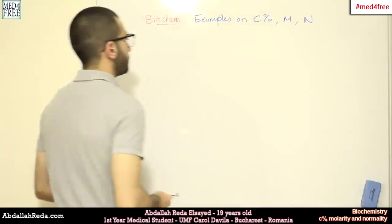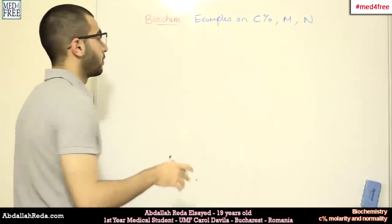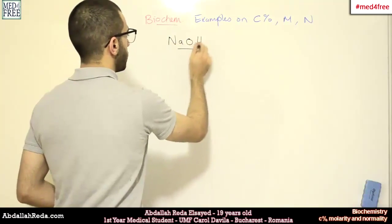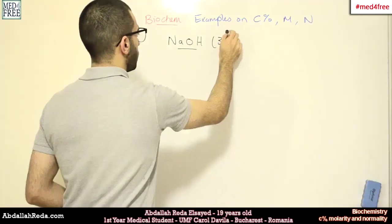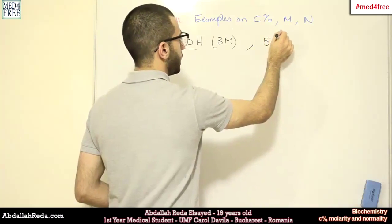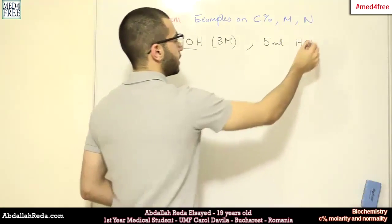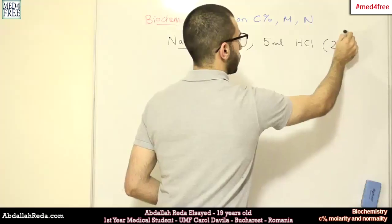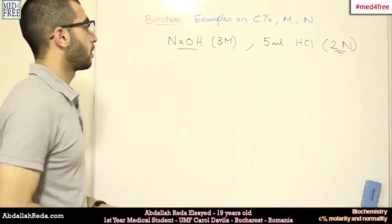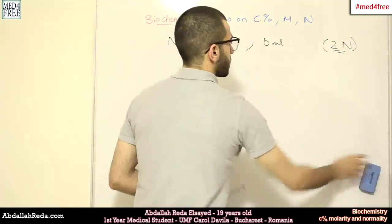For example, if I want to know the volume of the sodium hydroxide used, and for this sodium hydroxide is 3 molar, and I have, for example, 5 milliliters of hydrochloric acid. Let's work with sulfuric acid.